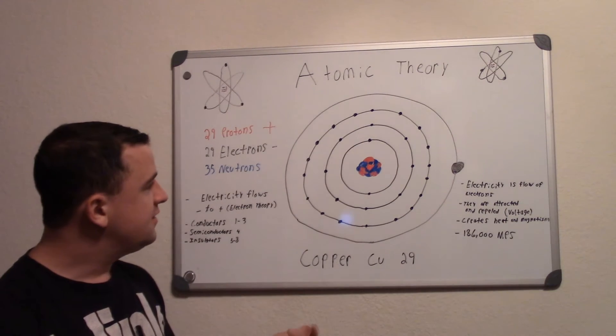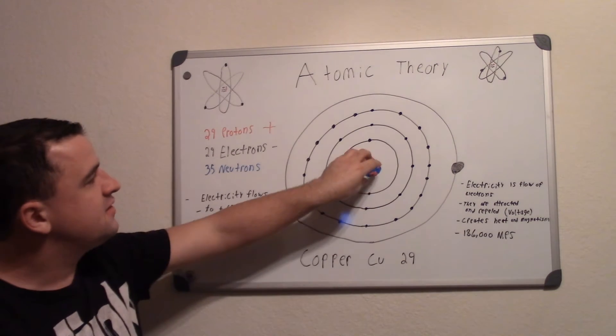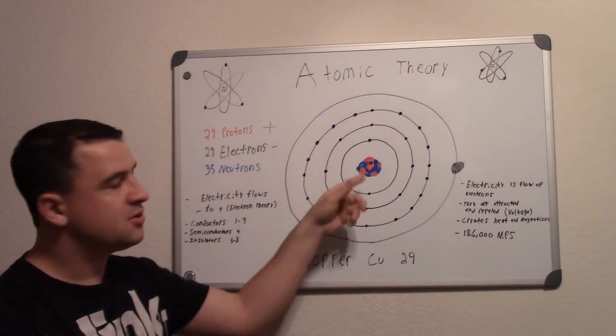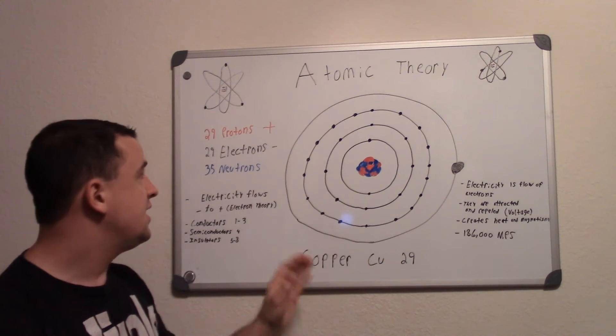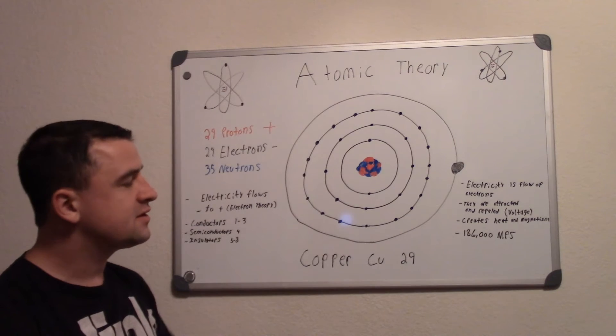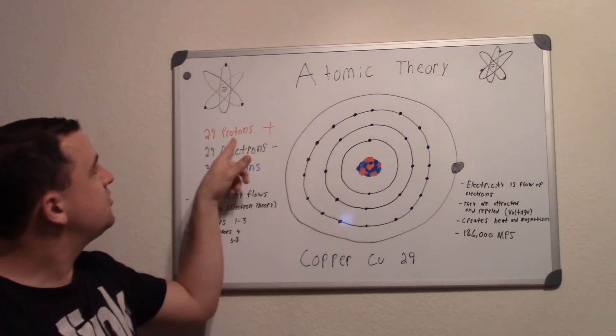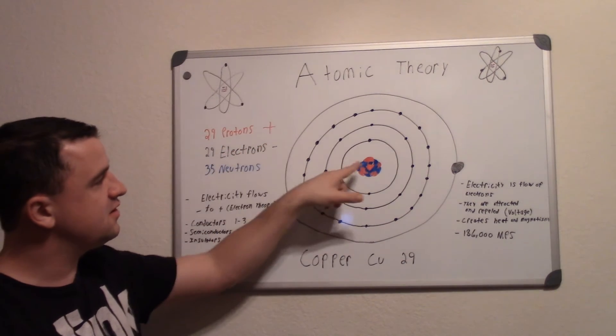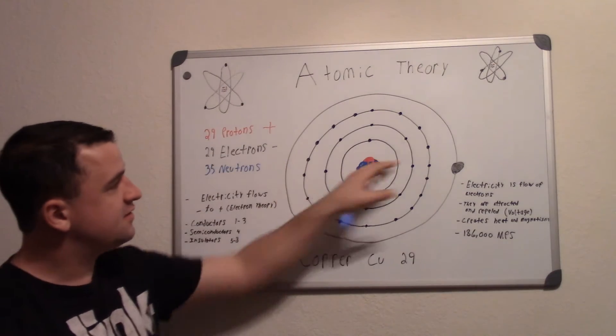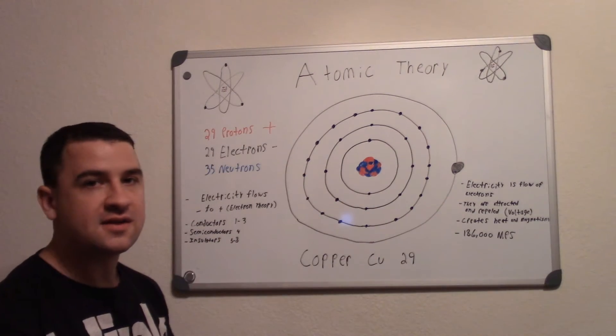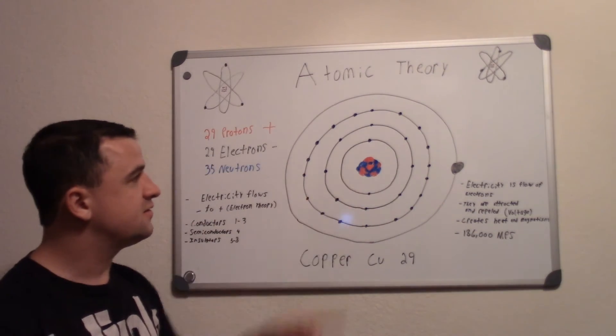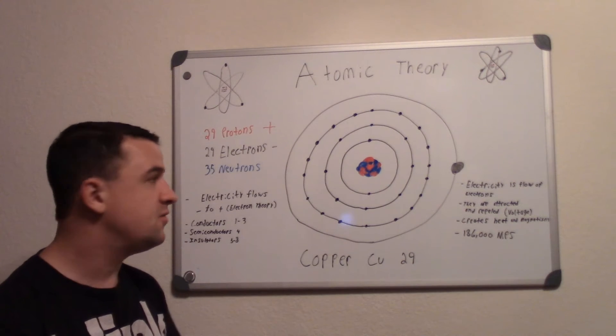Now in atoms, you have inside here the nucleus which contains the protons and the neutrons, and outside are the electrons. And as stated here, protons are a positive charge and electrons on the outside are a negative charge, and neutrons are a neutral charge, no positive nor negative.